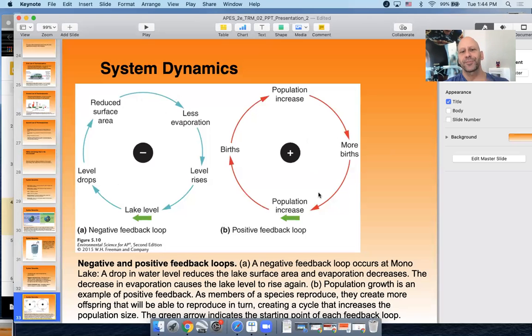Now, the opposite of that is a positive feedback loop. Imagine a population of people, and that population of people starts to go up. You have more people, which leads to more births. But if you have more births, then you have even more people, which means the population is going to go up even more, which means now you have more people that can give birth, increases the population. So in this example, the population is not going to return to its original number. It's going to continue to rise and rise and rise and rise. This is a positive feedback loop.